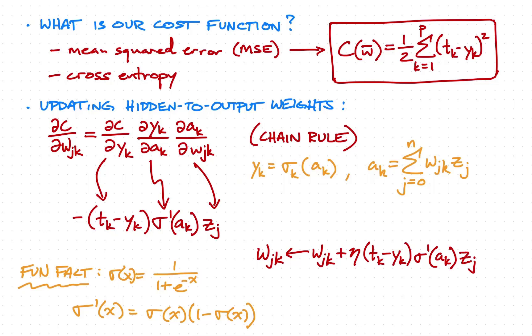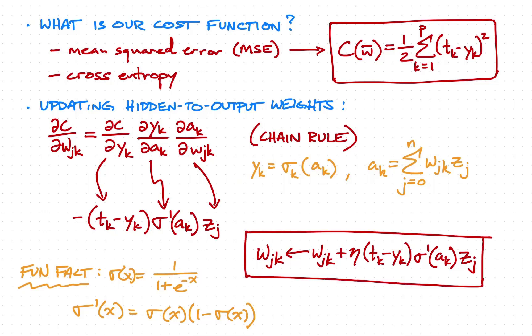Now that we have all three partial derivatives, we can write the full update equation for a weight mapping a hidden neuron to an output neuron. That update equals the current value minus eta times the gradient, but since the gradient already has a negative term, the negatives cancel, giving: plus eta times (t_k minus y_k) times sigma prime_k of a_k times z_j. We call this the sensitivity of output neuron k — delta_k — so the update simplifies to: eta times delta_k times z_j. This is the equation for updating the weights in the second array W2.